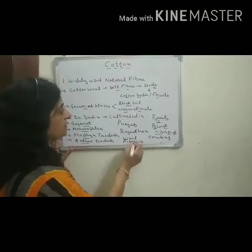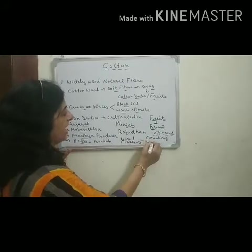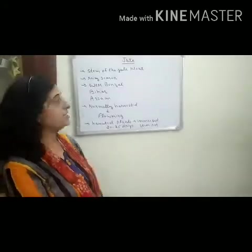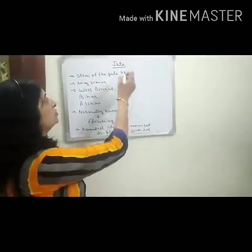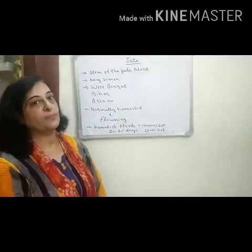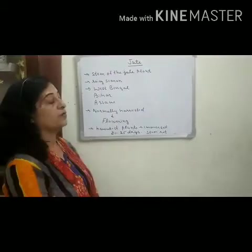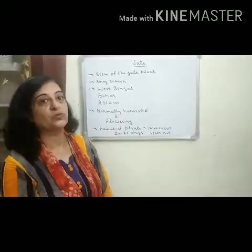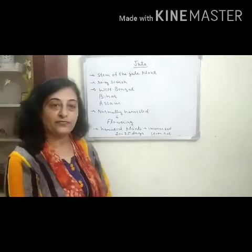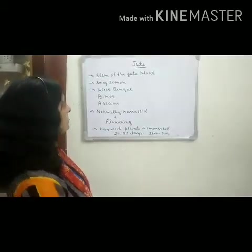After the separation of cotton wool from the seeds through the process of combing, we can use this cotton wool to make fibers by twisting together. These fibers are further used for making yarn and fabric. Now we will discuss about jute fibers. Jute is also a plant fiber and it is obtained from the stem of the jute plant.